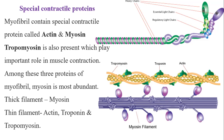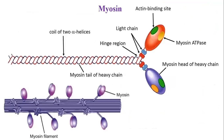Let us now discuss each protein individually. Myosin is the most abundant of the muscle proteins. It is globulin in nature and has a tadpole-shaped structure with an approximate length of 1520 ± 260 Ångströms.